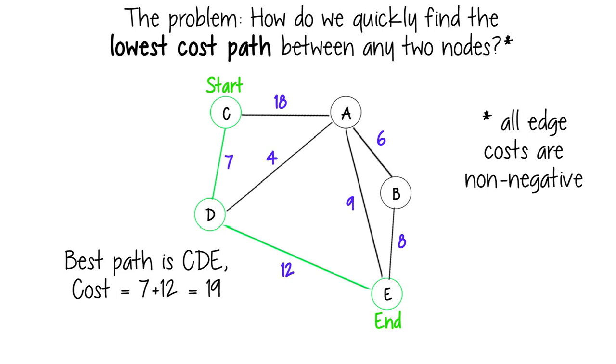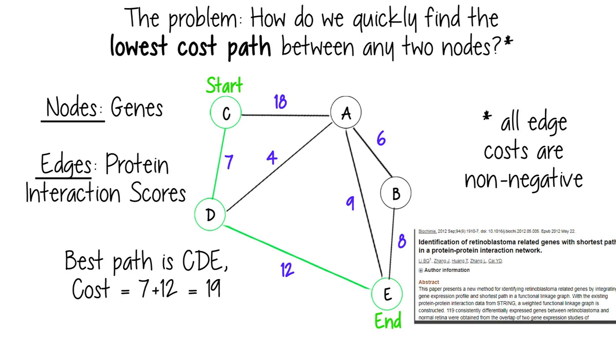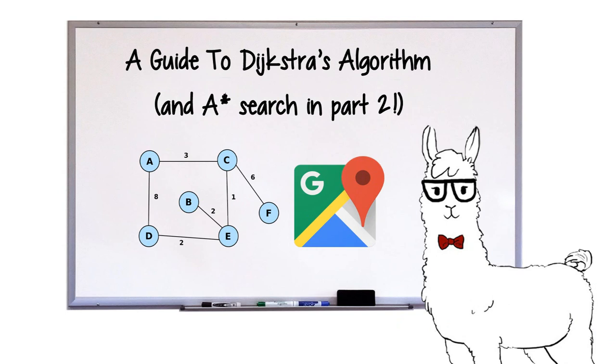Like, for example, what's the fastest way to drive between two locations, which genes make the most related proteins, and even for all you snakes, how do you make money by exploiting the market?